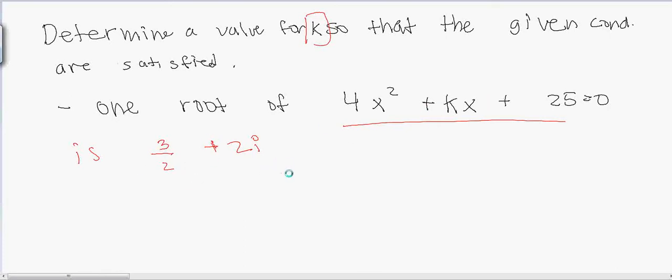If this right here is root 1, then root 2 must be the conjugate of that, which is simply 3/2 minus 2i. Alright, fair enough.